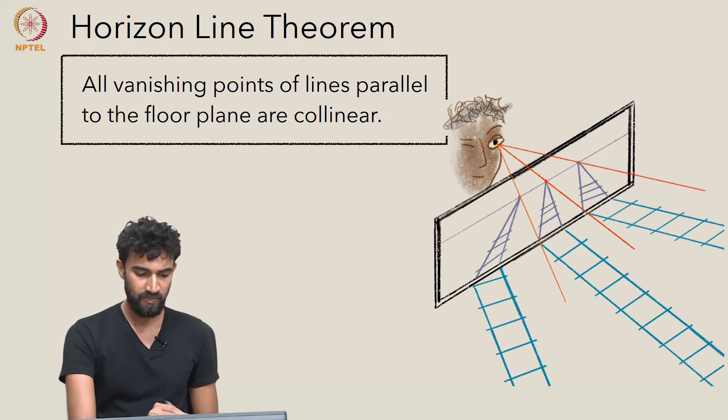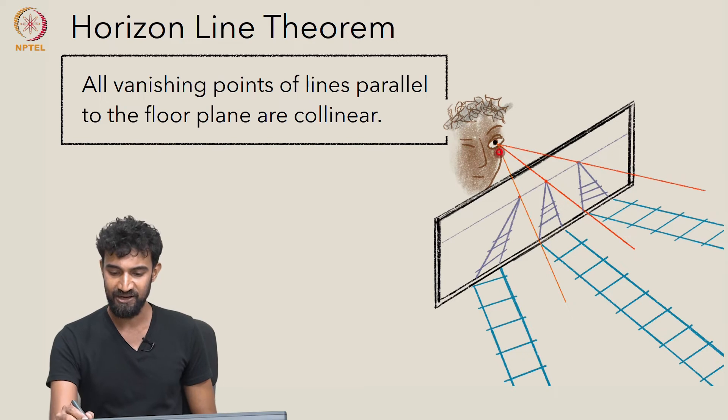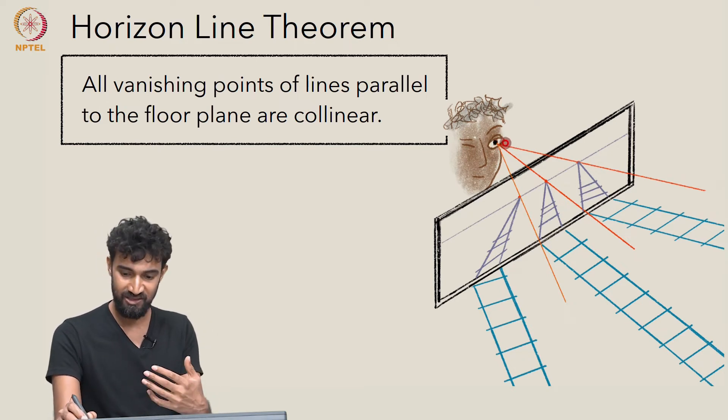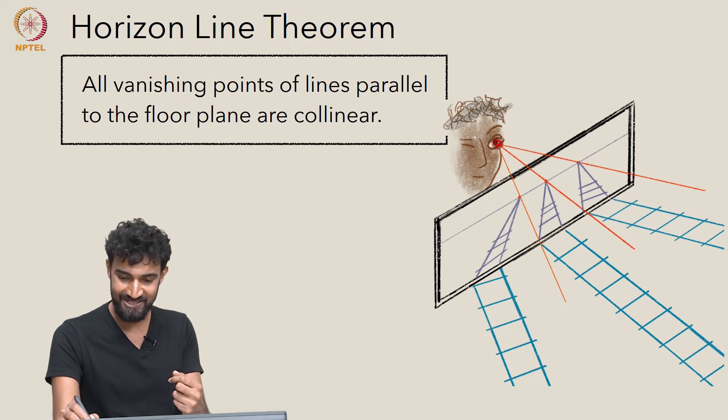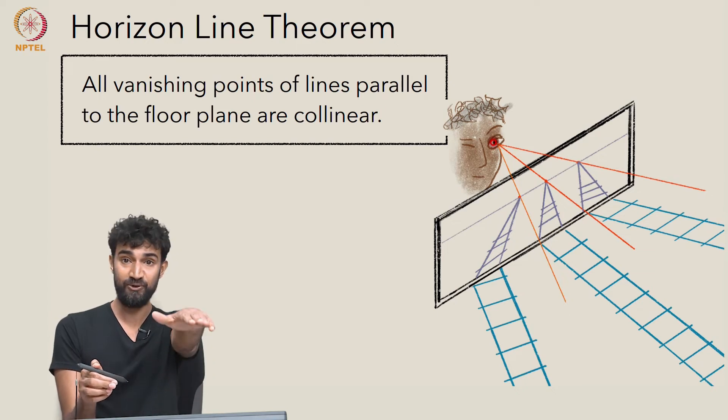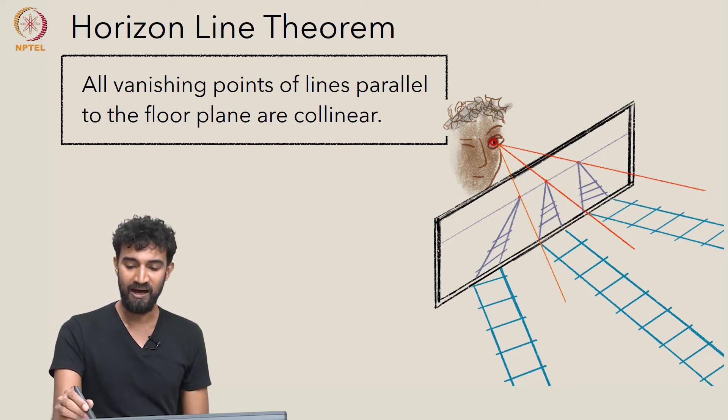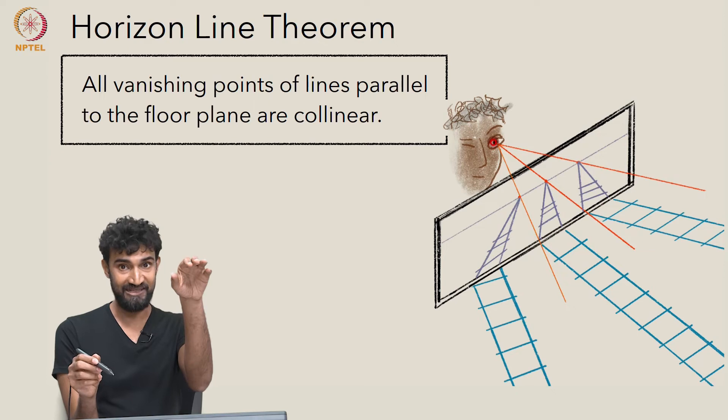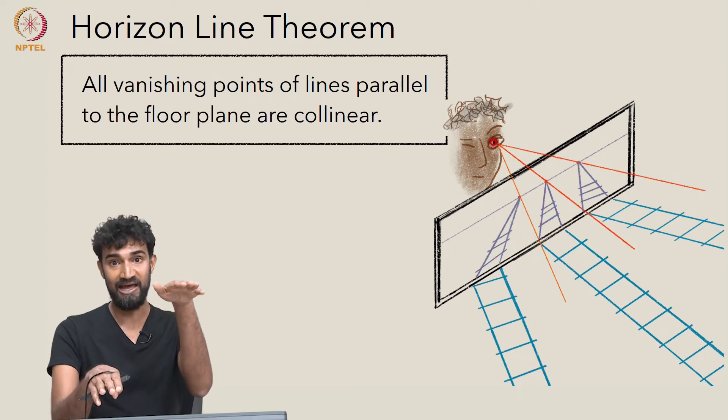Well, it's useful to once again go back to how our vanishing points are constructed. It's by taking sight lines from our eye and following the line in space further and further along, until you get to a limiting sight line which is parallel to that line in space.